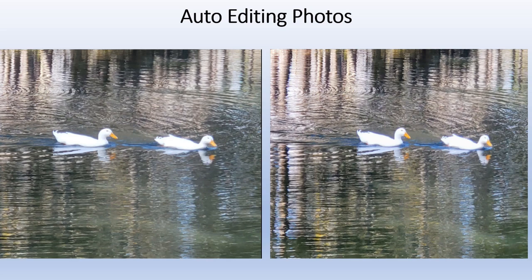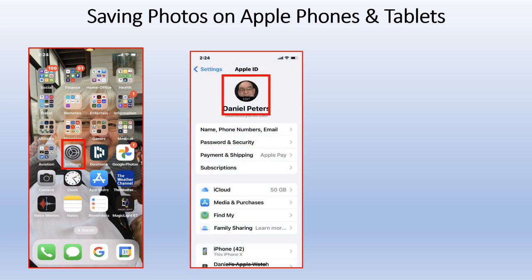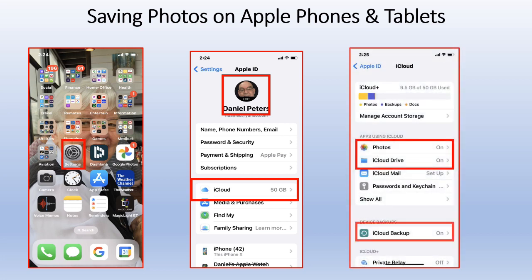Saving photos on Apple phones and tablets: make sure you are saving automatically. Click Settings, then click your name in the upper corner, which opens a screen showing iCloud, Find My, Family Sharing, and more. Click on iCloud — this automatically saves photos for you. Make sure Photos is turned on, iCloud Drive is turned on, and iCloud Backup is turned on. You want all three, so if your phone ever crashes you can restore from backup or retrieve from iCloud.